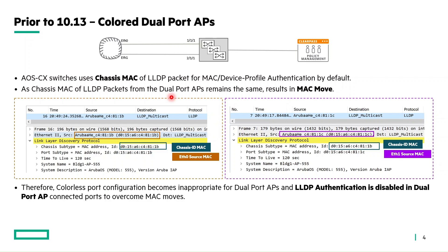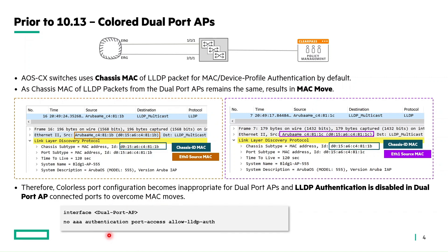To overcome the MAC move, the workaround was to completely disable LLDP authentication on dual port connected AP ports using the CLI: no AAA authentication port-access allow-lldp-auth. By default, authentication is triggered via LLDP, but this CLI disables it specifically on the client ports where the dual port AP is connected. Hence this becomes a colored configuration, rather than the colorless configuration applied to all ports. That is why, prior to 10.13, dual port AP deployment could only be done with colored ports, not colorless ports.